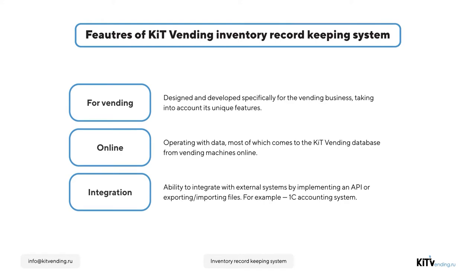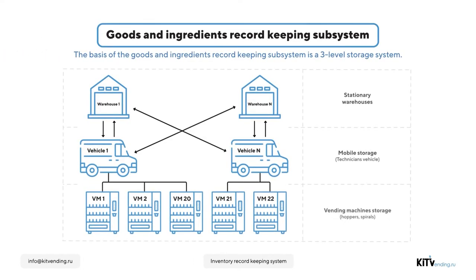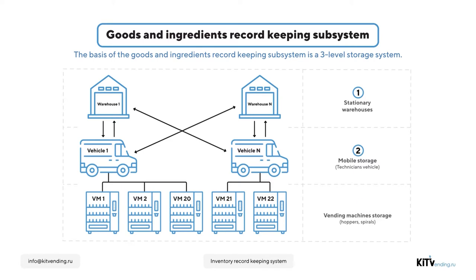Now let's talk about the subsystems our product incorporates. The goods and ingredients record keeping subsystem is based on a three-tier warehouse structure. The first level is a stationary warehouse, which stores leftovers. The second level is technicians' vehicles, which maintain the vending machines. The third level is the vending machine itself.